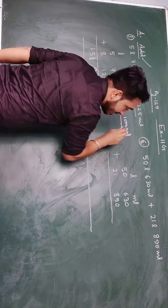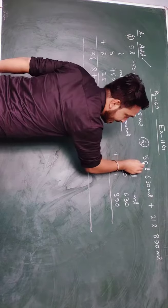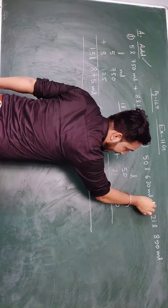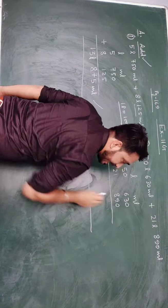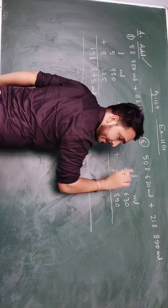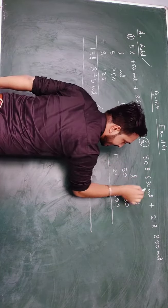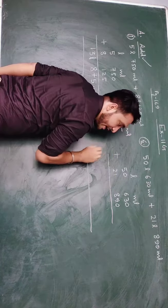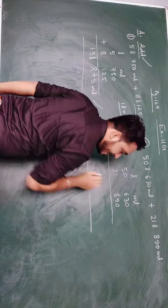Let's move to question number 6, that is of other type. 50 litre 630 milliliter, add 21 litre 890 milliliter. So 2 columns, litre milliliter. In litre 50, in milliliter 630, in litre 21, in milliliter 890.